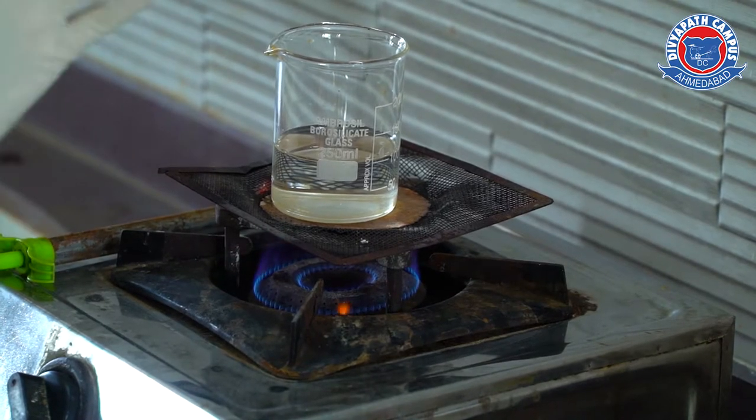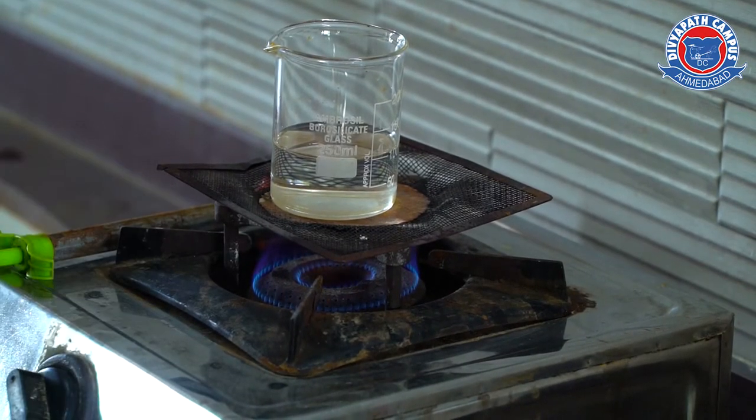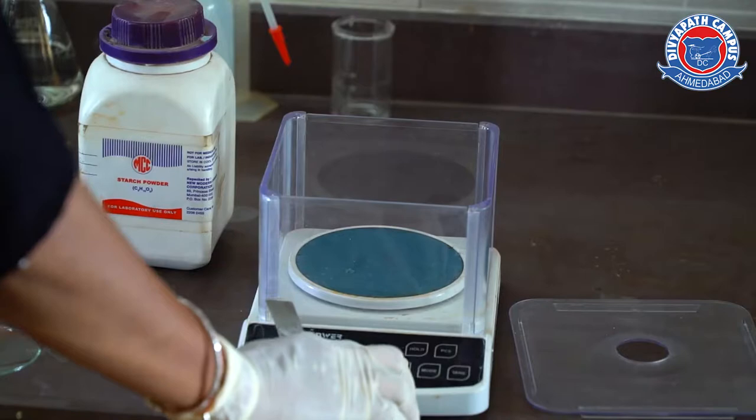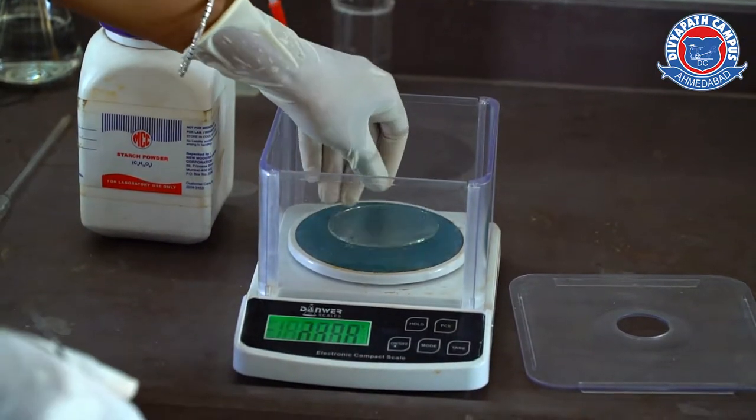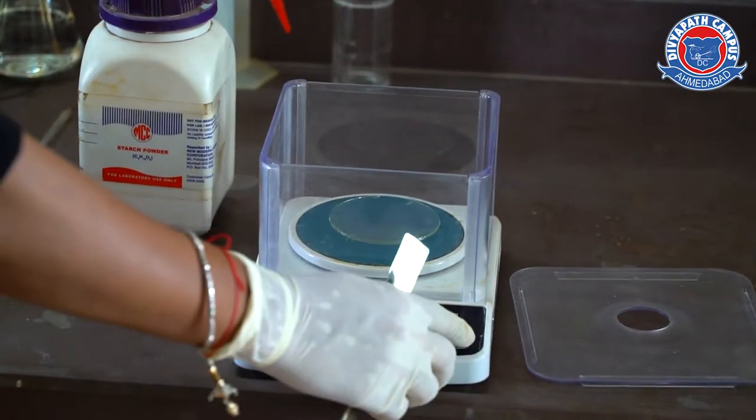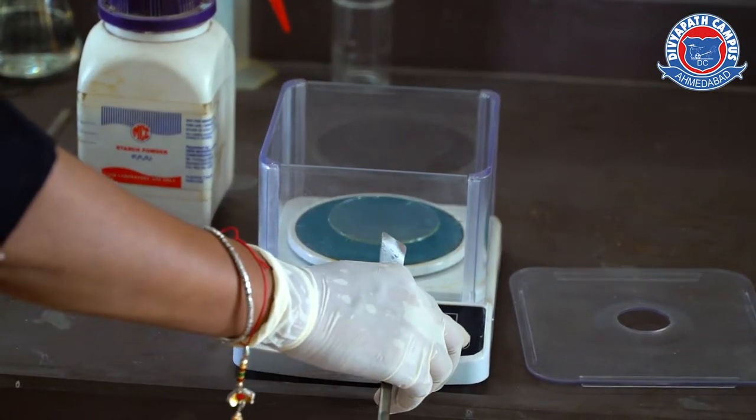Meanwhile, water is boiling, we have to weigh our starch powder. First of all, we will put the watch glass on the weighing balance, then transfer the watch glass inside it, and to neglect the weight, we will tare it.